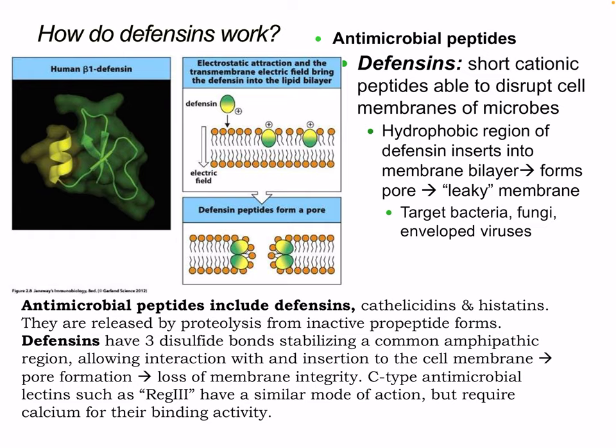Antimicrobial peptides include defensins, cathelicidins, and histatins. These are released by proteolysis from inactive propeptide forms. Defensins have three disulfide bonds stabilizing a confident amphipathic region, allowing interaction with and insertion into the cell membrane, causing pore formation and loss of membrane integrity. C-type antimicrobial lectins, such as REG3, have a similar mode of action but require calcium for their binding activity.